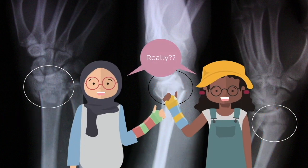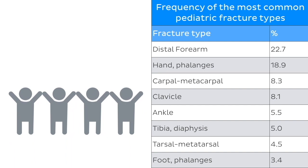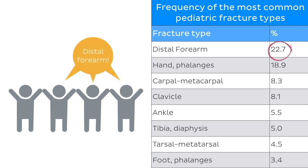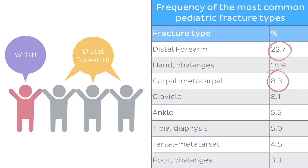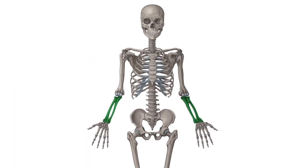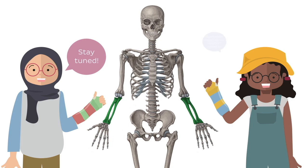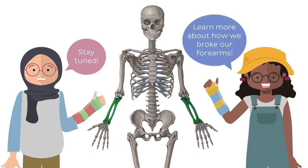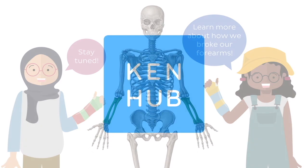Yes, really! In fact, fractures of the distal forearm are almost three times more common in children than fractures to the actual bones of the wrist. If you're interested to find out more about the anatomy of these bones and their fractures, then this is the tutorial for you.